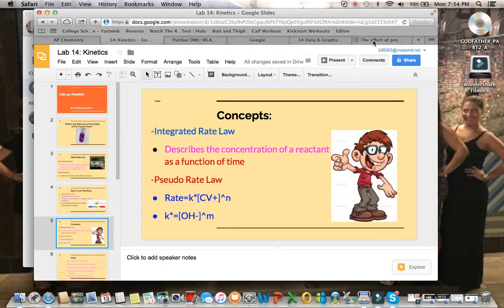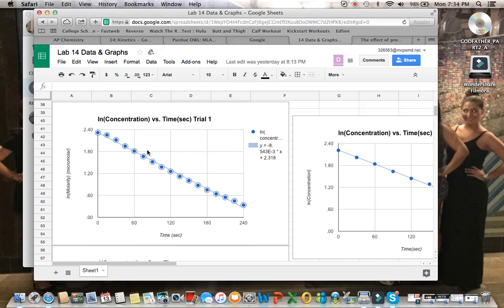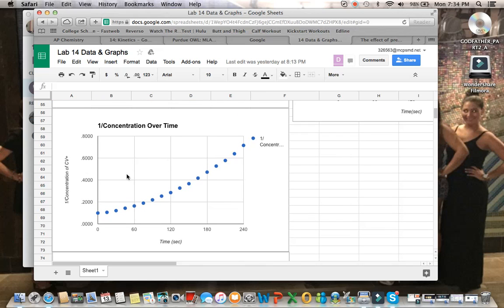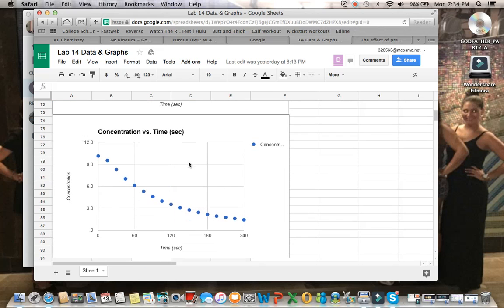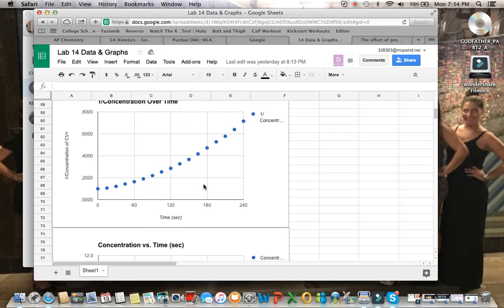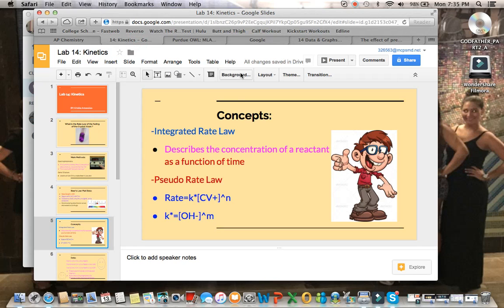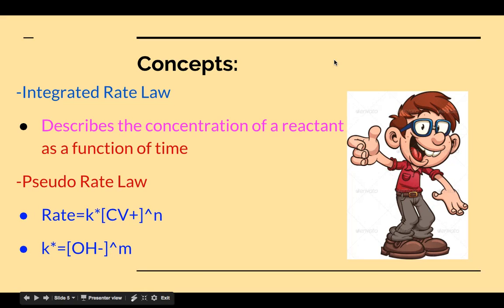We have our graphs here. This would be the graph for the ln of concentration of CV versus time, or in other words, the first-order reaction graph. The second-order reaction graph, 1 over concentration. And then, zero-order concentration versus time. Basically what we're looking for here was the graph that gave us the most linear relationship, which as you can see, happened to be the ln of concentration. That is how we figured out that crystal violet was a first-order reaction.